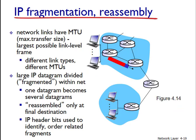Not all link layer protocols can carry network layer packets of the same size. Some protocols carry big datagrams whereas other protocols can only carry little packets. For example, Ethernet frames can carry up to 1500 bytes of data whereas frames from some wide area links can carry no more than 576 bytes. The maximum amount of data that a link layer frame can carry is called the maximum transmission unit, or MTU. Because each IP datagram is encapsulated within the link layer frame for transport from one router to the next, the MTU places a hard limit on the length of an IP datagram.